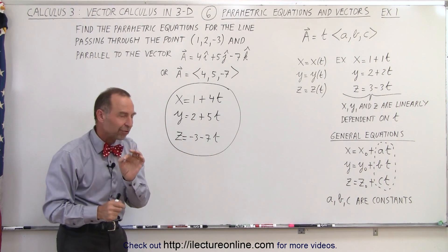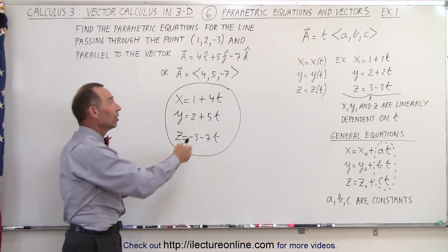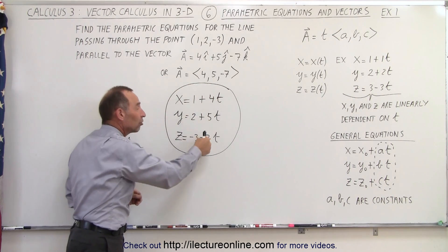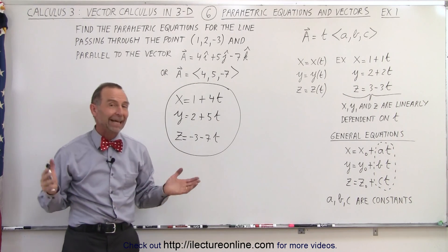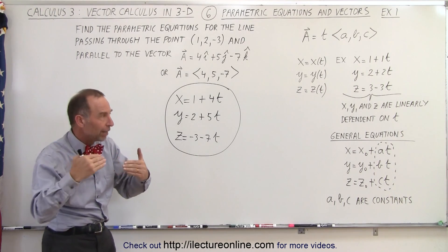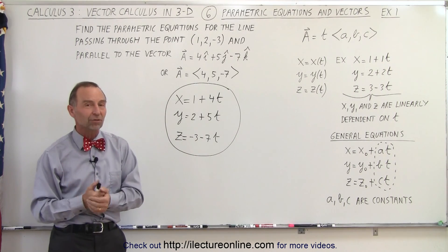In other words, the parametric variable drives a unitary change in x, y, and z, and the amount of that change is defined by the slope of the parametric equations, 4, 5, and -7. And that's how we understand better the relationship between vectors and parametric equations in three dimensions.